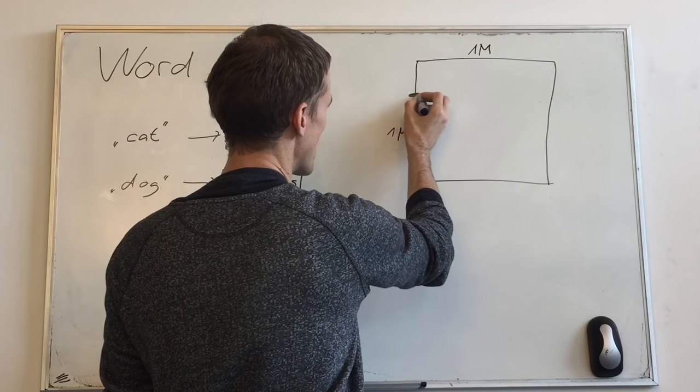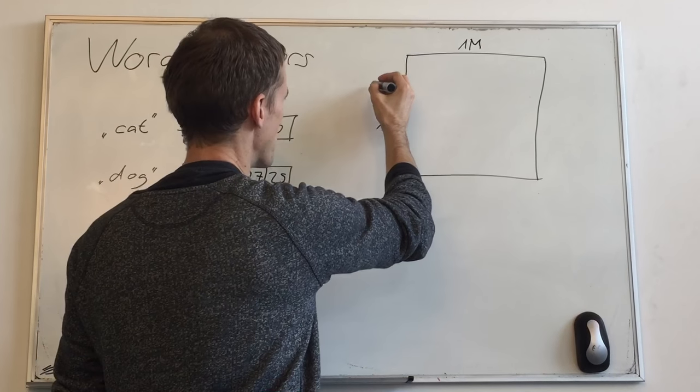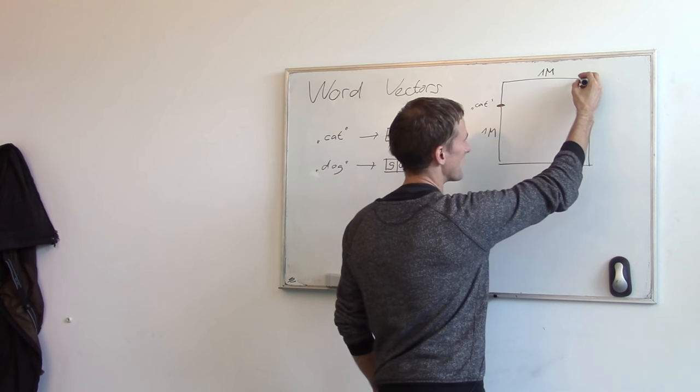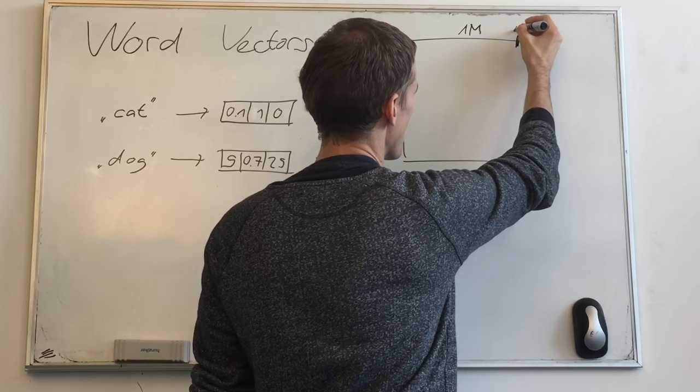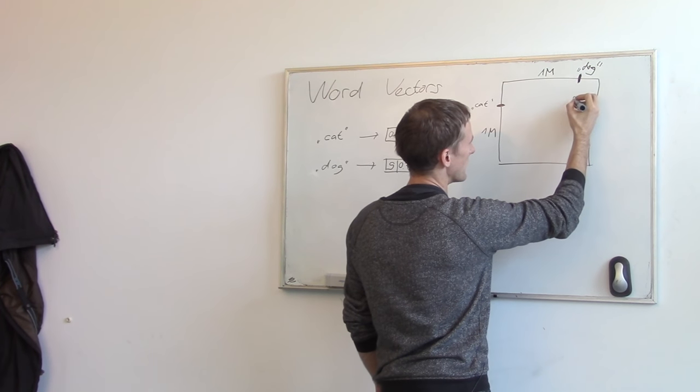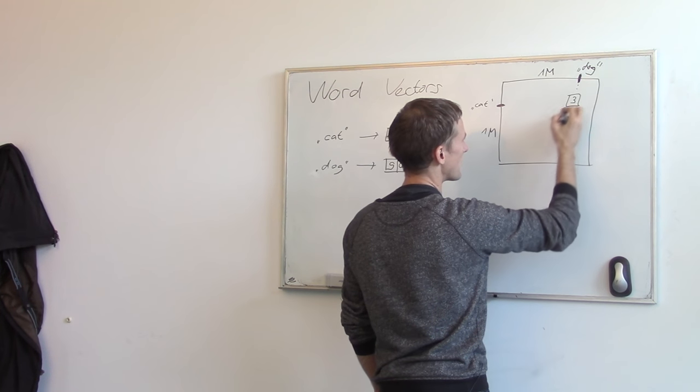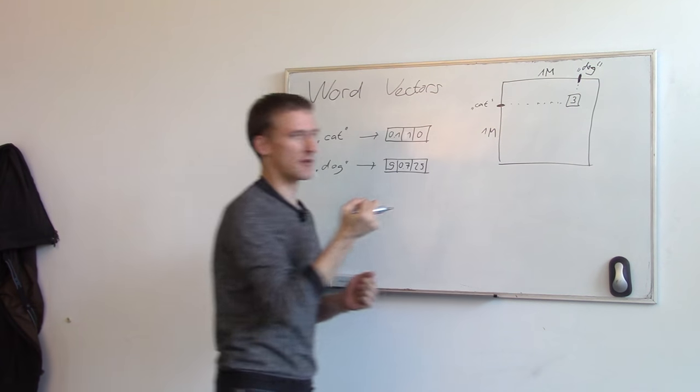And in every position of this table, we write how many times did these two words appear together. So here is the row of this table, which corresponds to the word cat. And here is another word. And I can look at the column of my table for the other word. So here is the dog. And then I look at this position and I see in Wikipedia these two words have appeared together three times.